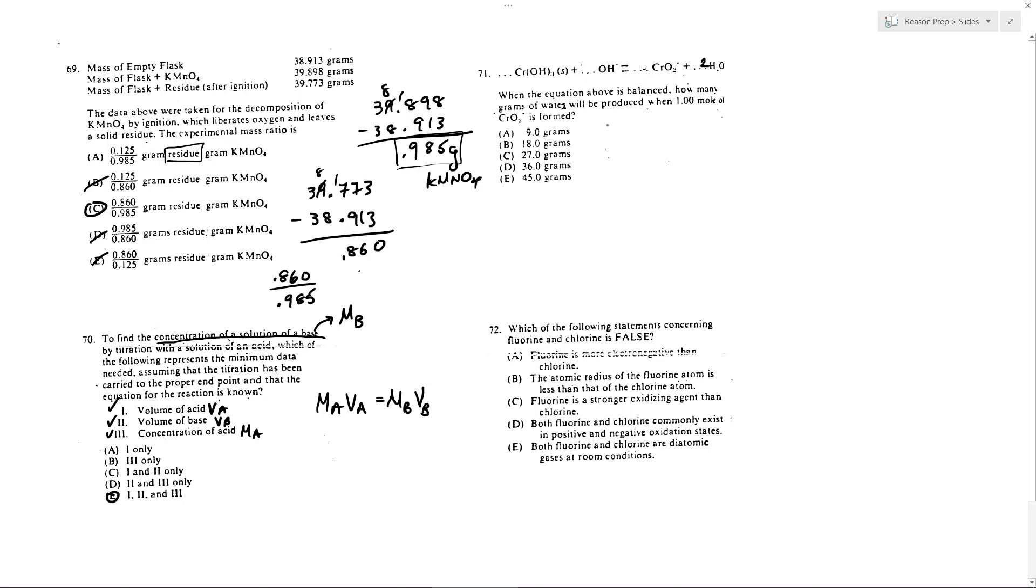I'm producing one mole of CrO2. So that means by the ratio, I'm producing two moles of H2O. And so it is 18 grams per mole. So how many grams of water would be formed? Well, it's two moles times 18 grams per mole times that molar mass. And so I get 36 grams. And so it looks like 71 is D.